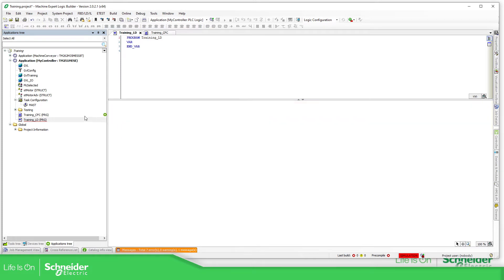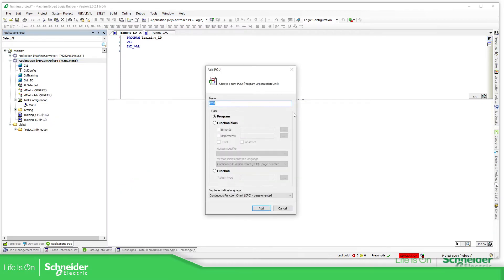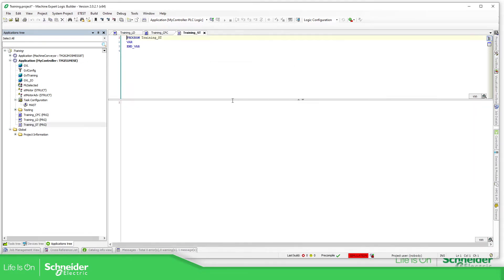And let's create now, just delete this one. Let's create another POU. This training ST for a structured text. Here. Good. So now...